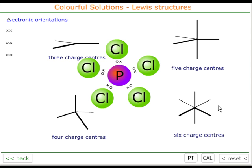Remember the structures we have here. 5 charge centers: 1, 2, 3, 4, 5. The 5 charge centers will adopt this trigonal bipyramidal orientation.